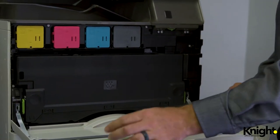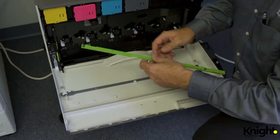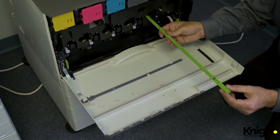For a color device, remove the green cleaning tool seated on the back of the front cover and insert it into the four cleaning ports located on each drum unit.